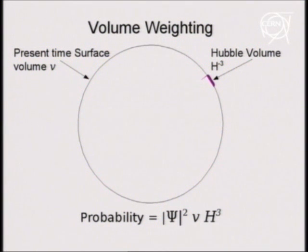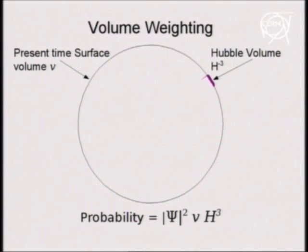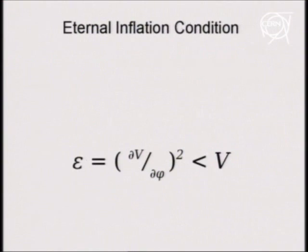If the initial field phi 1 is large, and the potential is not too steep, the field will slowly roll down the potential to the minimum at phi equals zero. During the slow roll, the universe will inflate, or expand almost exponentially, by a large factor.